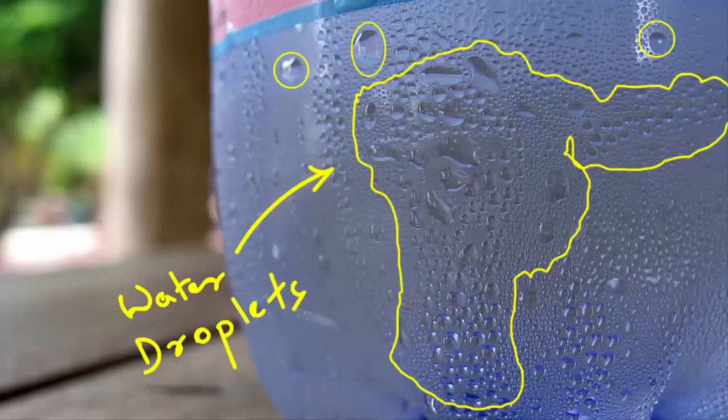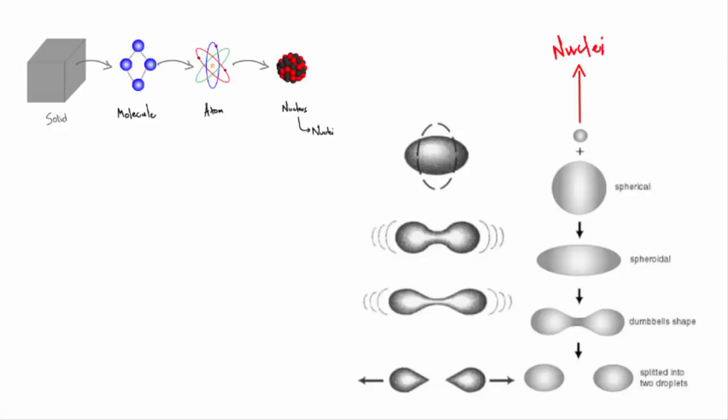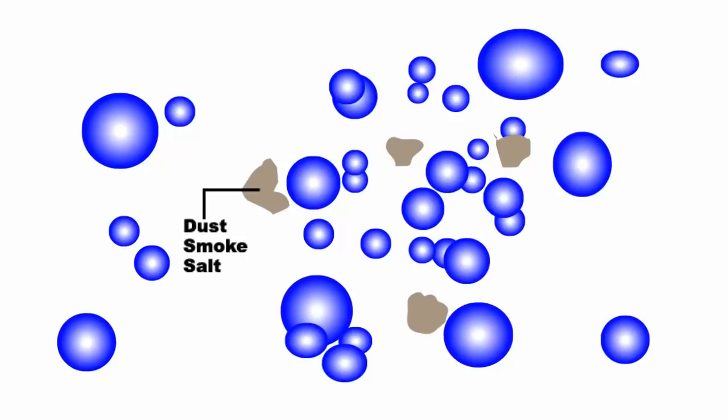Therefore when water droplets are formed during condensation, there is a central nuclei that holds the water together in the form of a drop. So what is this nuclei? Well these are nothing but extremely tiny particles of dust, smoke and salt of the ocean.